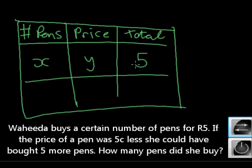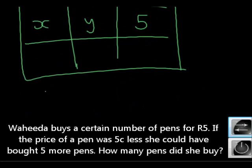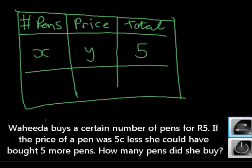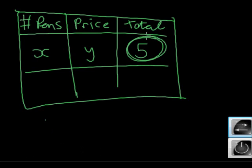How did we get that 5? If we knew how many pens she bought and we knew how much it cost, how would we have gotten the 5? For example, if I said one pen was 2 Rand and she bought 10 pens, how much did she pay in total? 20 Rand. How did you get 20? Times. So in other words, this total is x times y is equal to 5.